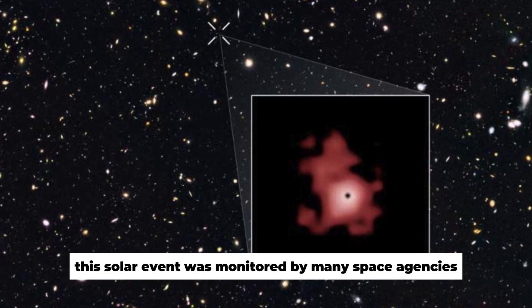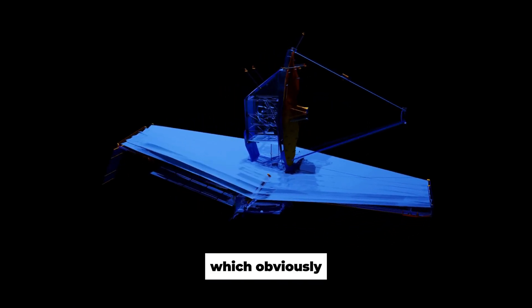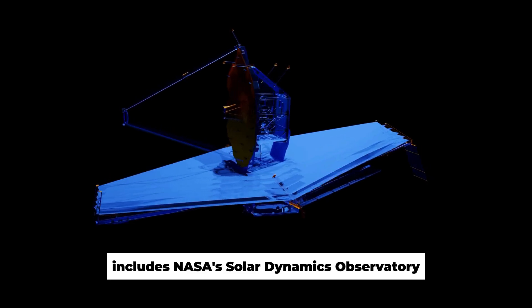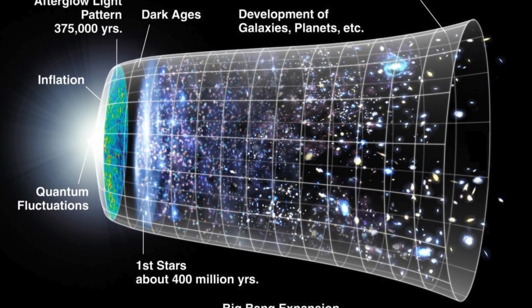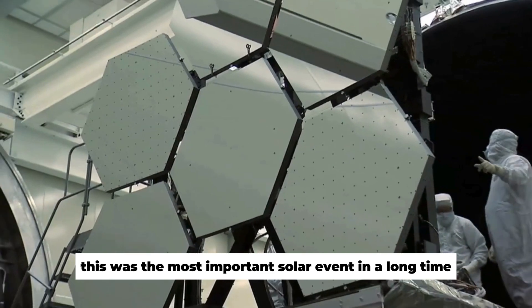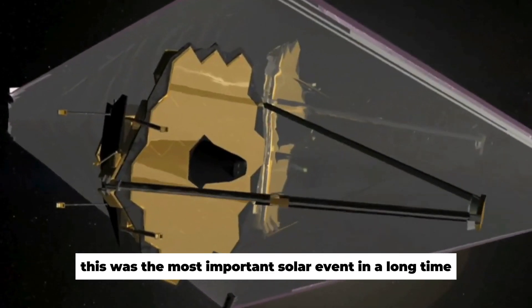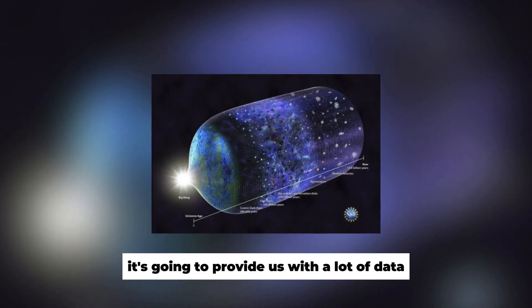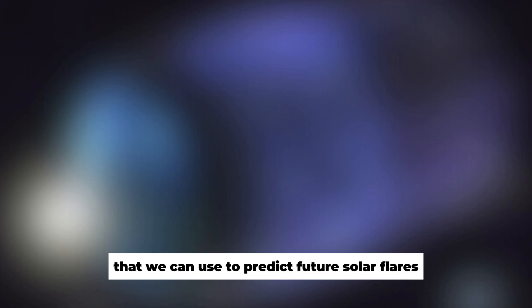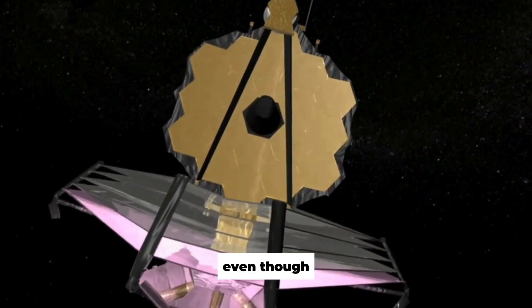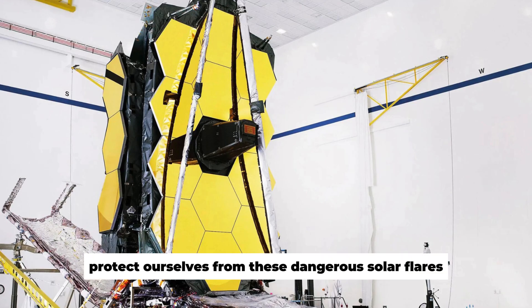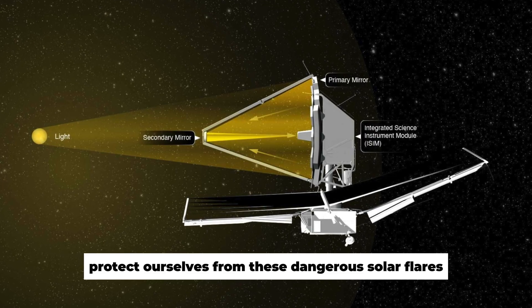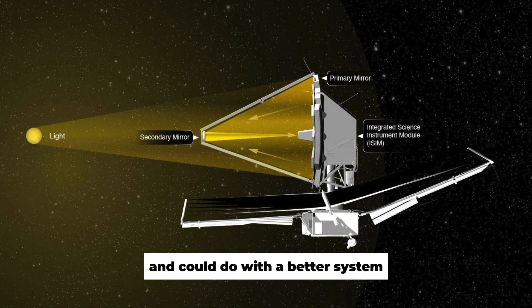This solar event was monitored by many space agencies, which obviously includes NASA's Solar Dynamics Observatory. And there's a silver lining to it, too. You see, as this was the most important solar event in a long time, it's going to provide us with a lot of data that we can use to predict future solar flares. Even though we still have some tech for these predictions, we're currently unable to protect ourselves from these dangerous solar flares and could do with a better system.